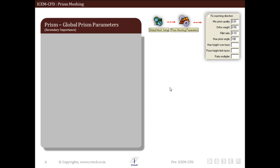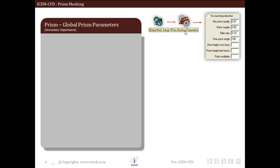Now let us see the global prism parameters. For this we go to global mesh setup and then prism meshing parameters. The global prism parameters that we will be discussing now are of secondary importance.